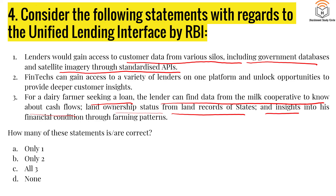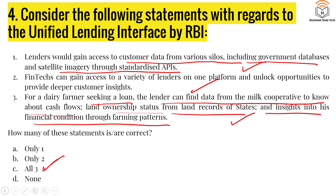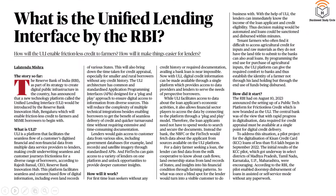The lender can also access land ownership status from land records of the state and insights into the farmer's financial condition through farming patterns. Just like the Digital Agriculture Mission, the Unified Lending Interface by RBI aims to make lending easier — when you go to a bank they require many documents, and the ULI helps authenticate that data from various government databases. All three statements are correct; the answer is C. The Hindu newspaper today also has a detailed article: 'What is the Unified Lending Interface by RBI' — do read that as well.